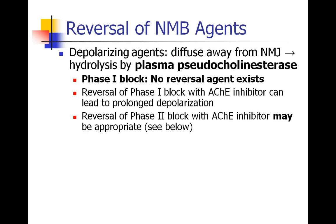As an overview, we can reverse some of our neuromuscular blocking agents. Specifically, depolarizing agents reverse themselves: they diffuse away from the neuromuscular junction and get hydrolyzed — not by acetylcholinesterase, but by plasma pseudocholinesterase. There is no reversal agent for phase one block; it happens on its own.